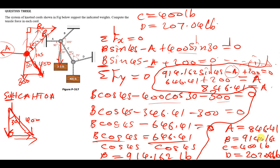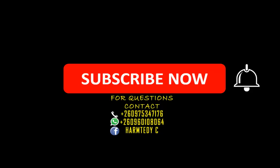So this is exactly how you solve such a question. We found: A = 846.41 lb, B = 914.162 lb, C = 400 lb, and D = 207.04 lb. If you encounter any question on cords, ropes, strings, or truss members, you solve it in the same way. Thank you very much for watching today's tutorial. If you haven't subscribed, click the subscription button. Feel free to contact me on WhatsApp. My name is Hamtet, shalom.